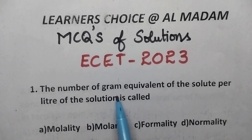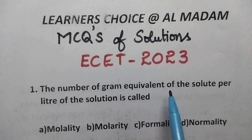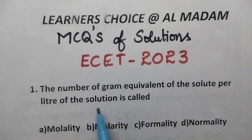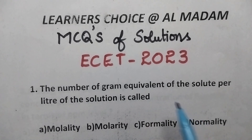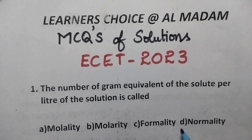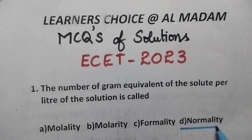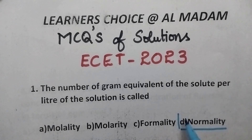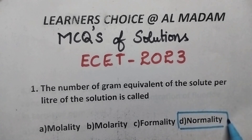The number of gram equivalents of the solute per liter of the solution is called as? The number of gram equivalents per liter of the solution is called as the normality. So option D is the right answer.